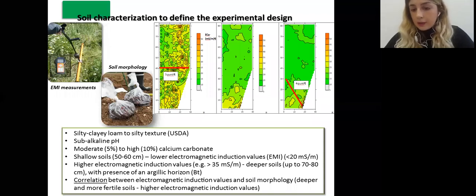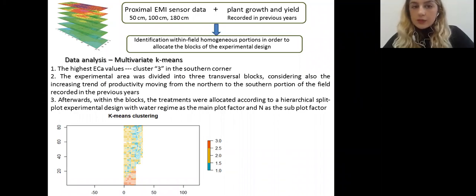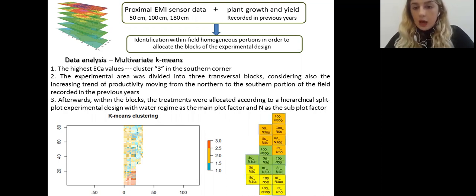Using proximal EMI sensor data, and plant growth and yield recording in previous years, we used to identify field homogeneous portions in order to allocate the blocks of the experimental design. For statistical analysis, we had multivariate k-means. And we had three clusters. In one cluster, we saw that it has the highest apparent electrical values. And also, from previous years, we saw that the highest productivity is in that part. So, that helped us to understand how to organize our experimental design.